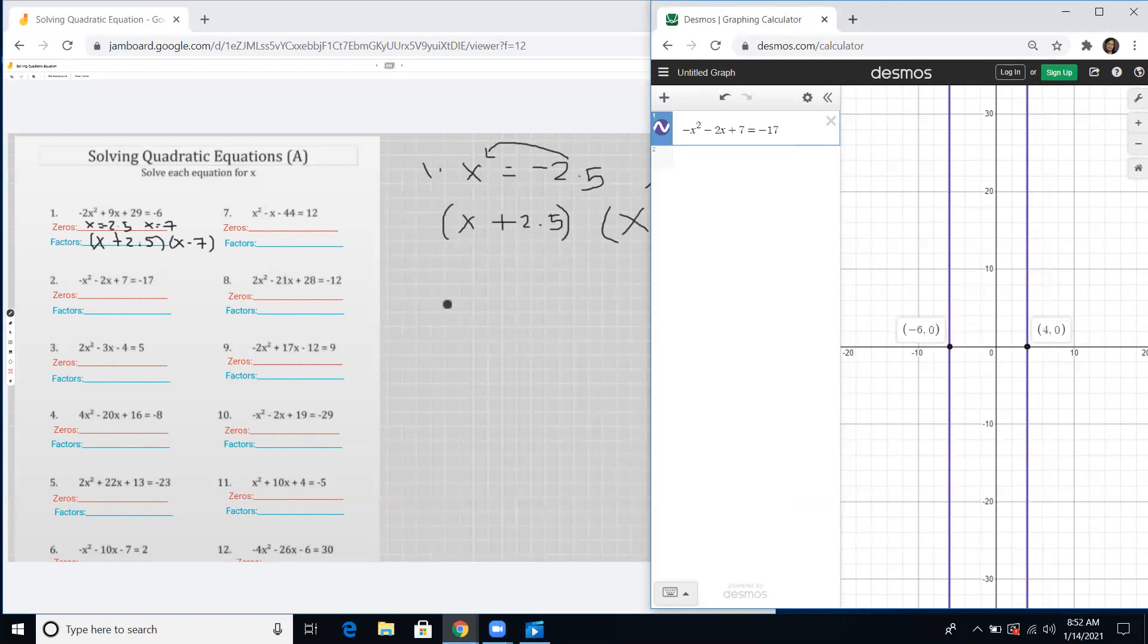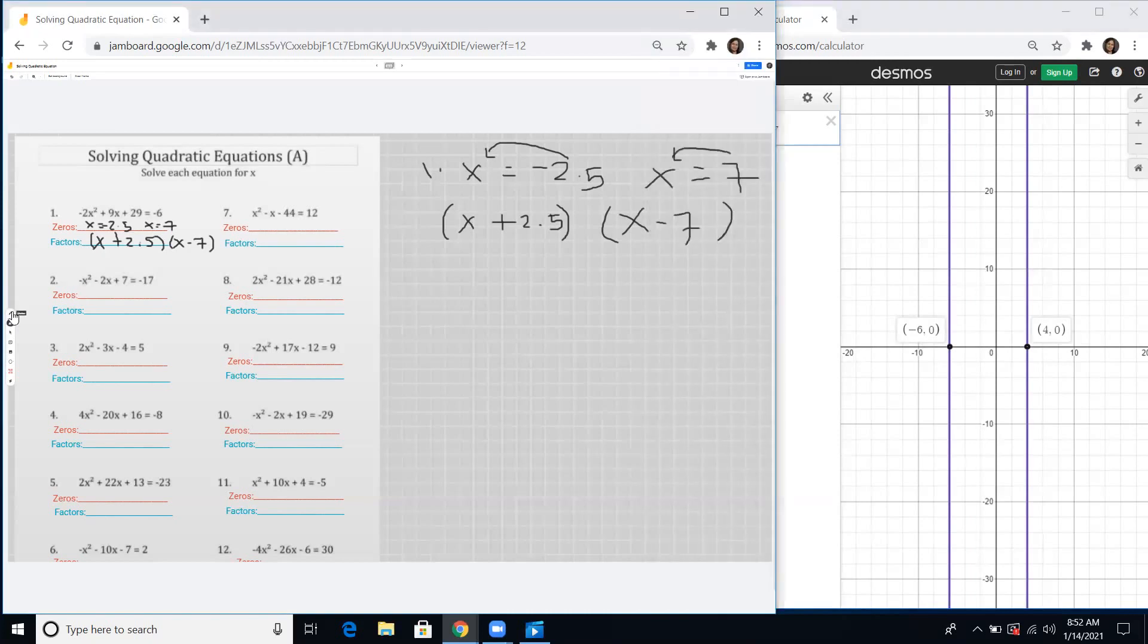Let's write our answer. The difference between zeros and factors is the way we write them. Zeros or x-intercepts or solutions are always written in the form of x equals something. We have x equals negative 6. Don't forget the negative sign. And on the other one we have x equals positive 4.